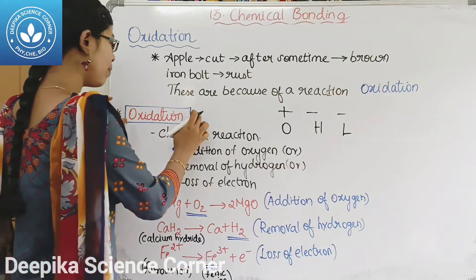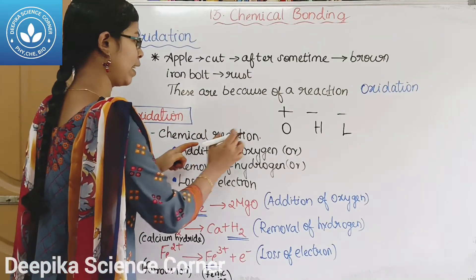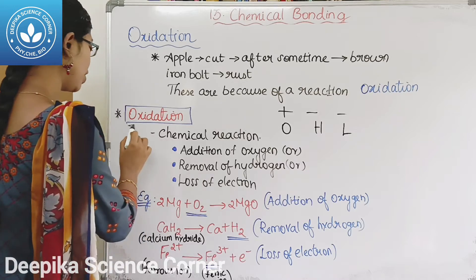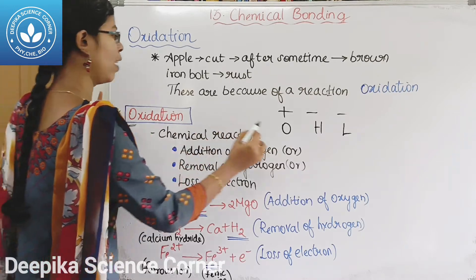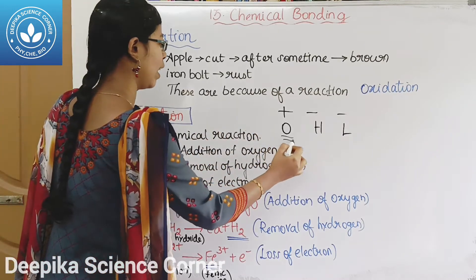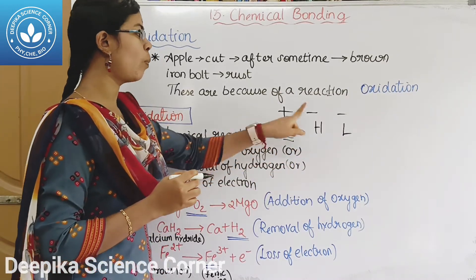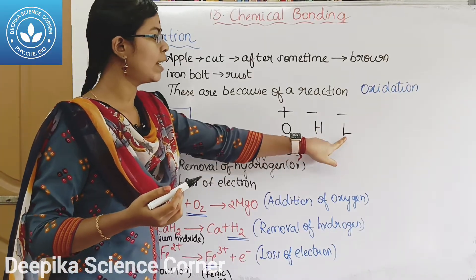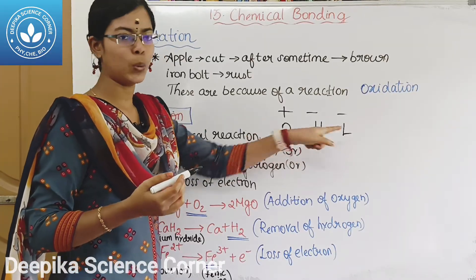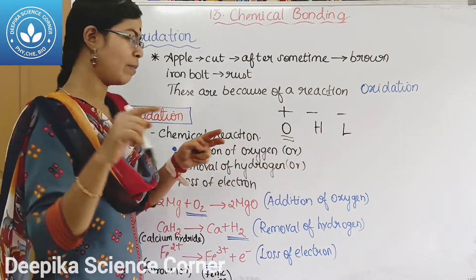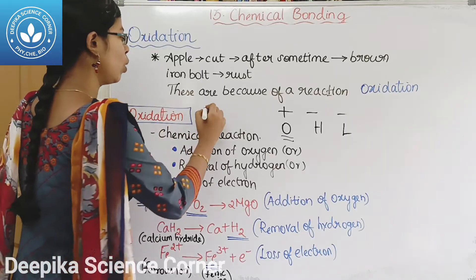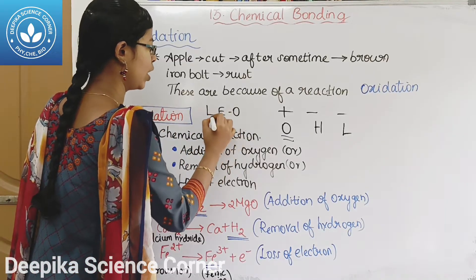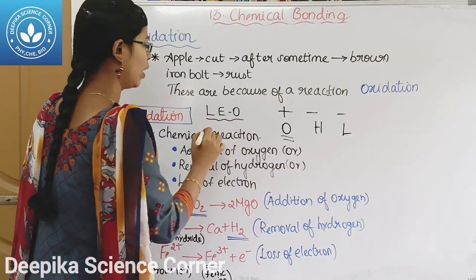When oxidation occurs, oxygen is added. We remove hydrogen from the chemical reaction. In this case, if electrons are lost from a substance, the loss of electrons is the oxidation. This is the oxidation reaction.